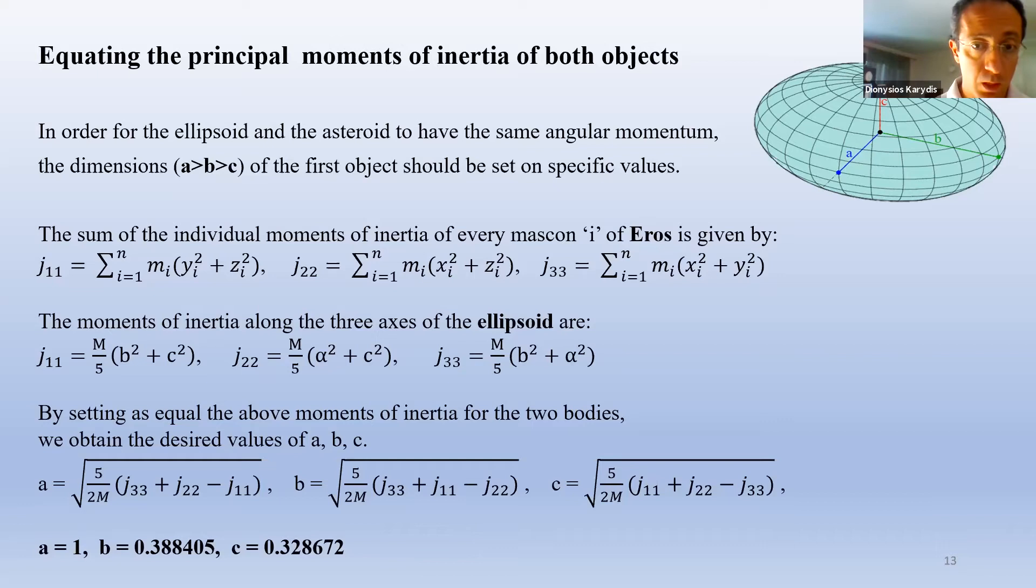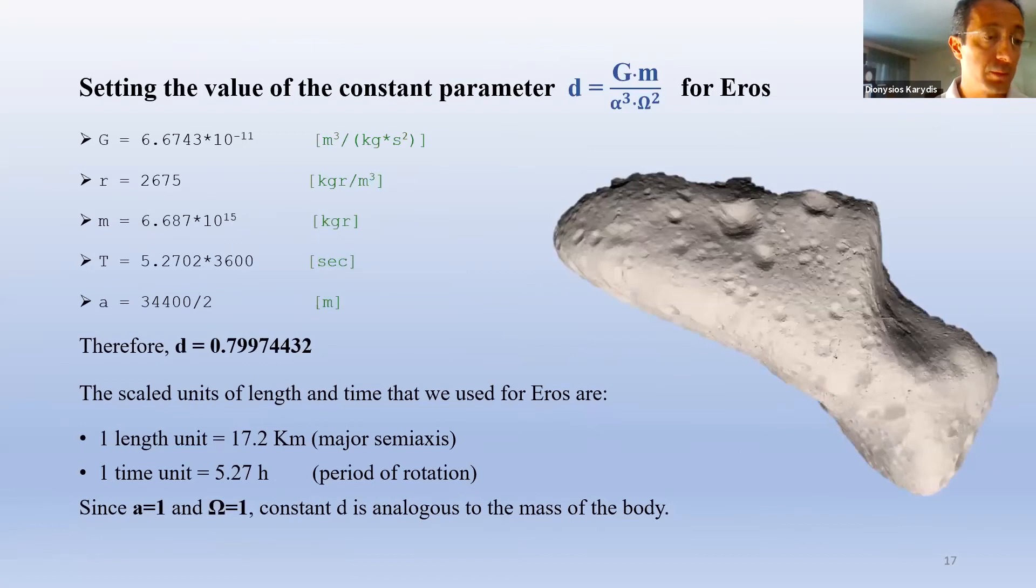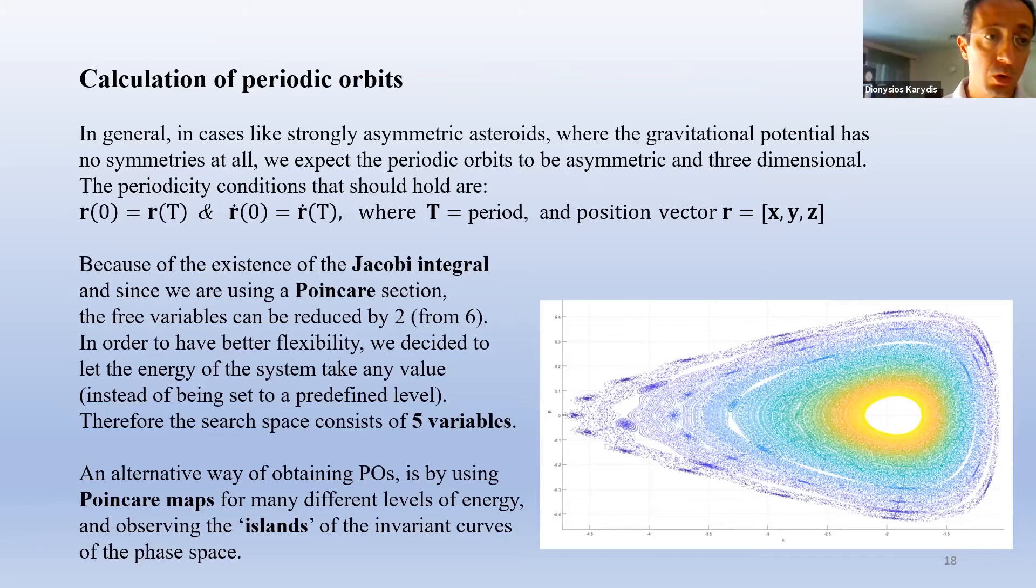In cases like strongly asymmetric asteroids, where the gravitational potential has no symmetries at all, we expect the periodic orbits to be asymmetric and three-dimensional. The periodicity conditions that should hold are that after a full period the position and velocity vectors should be exactly the same. Because of the existence of the Jacobi integral and since we are using a Poincaré section, the free variables can be reduced from 6 to 4. An alternative way of obtaining periodic orbits is by using Poincaré maps for many different levels of energy and observing the islands of the invariant curves of the phase space.